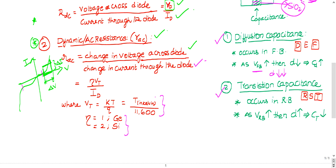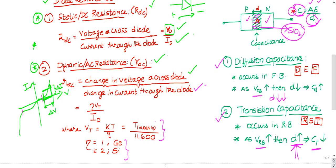Transition capacitance occurs in reverse bias. As reverse voltage increases, opposite polarity charges attract, so d increases — and since C and d are inversely proportional, C decreases. A simple memory trick: the alphabet series D-E-F — D for diffusion, F for forward bias — so diffusion capacitance operates in forward bias. As forward voltage increases, depletion width decreases and diffusion capacitance increases.